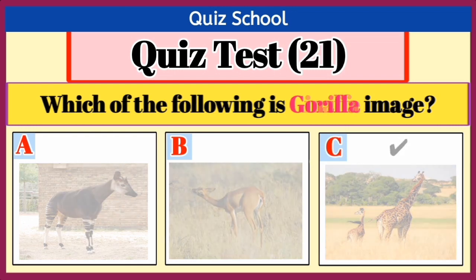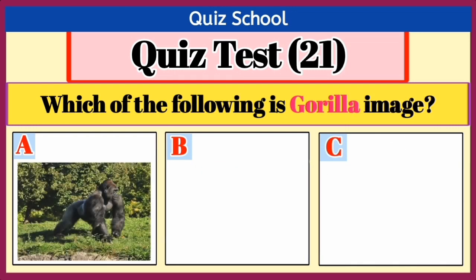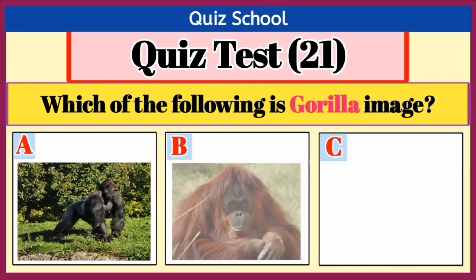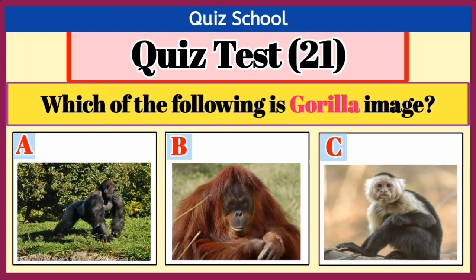Question number 4. Which of the following is the gorilla image? Option A, Option B, or Option C. Right answer is Option A.